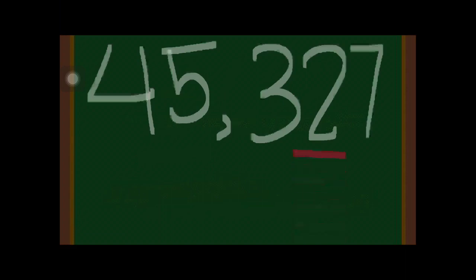How about 45,327? What is the place value of digit 2? Since digit 2 is the second position from the right, the place value of digit 2 is the tens place.